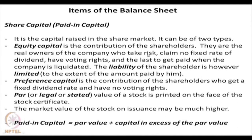In contrast, preference capital shareholders get only a fixed dividend rate — say 9% — every year whether or not the company makes a profit, but they have no voting rights. Equity shareholders may get 50% dividend one year and only 5% another year, or nothing in yet another year. Normally on the stock certificate a value is written called par value, legal value or stated value. The company may charge a premium above par value; for example, par value may be 10 rupees but the company charges 110 rupees, making the capital in excess of par value 100 rupees, giving a total paid-in capital of 110 rupees per stock.